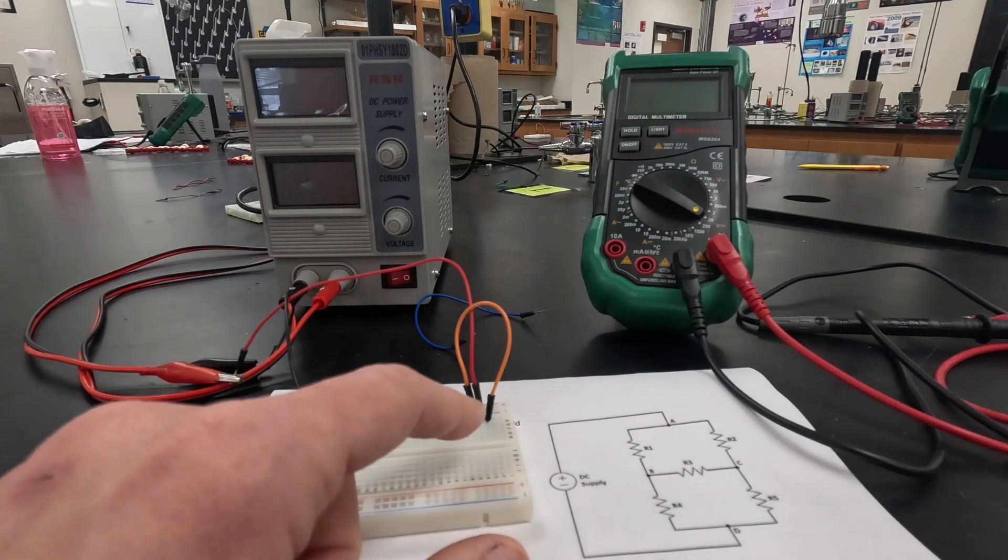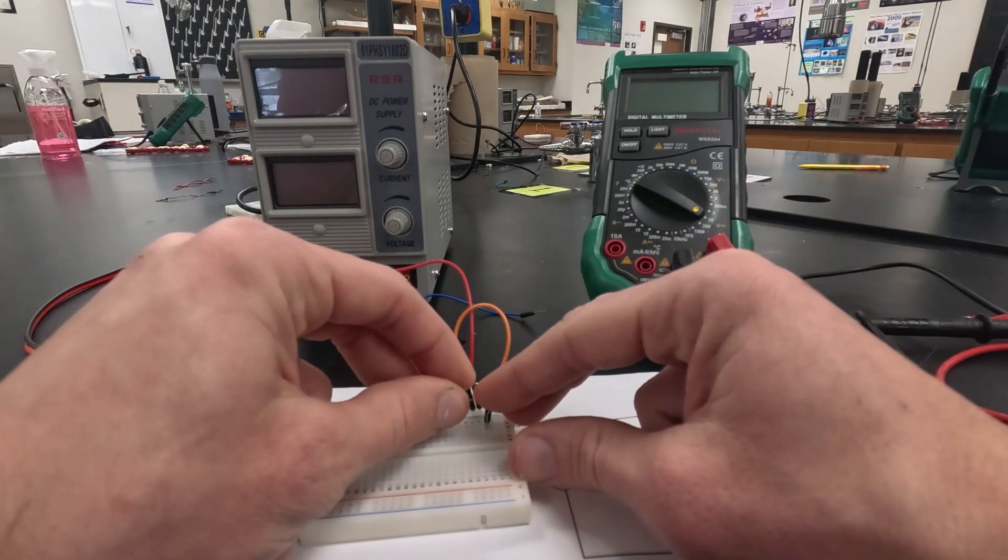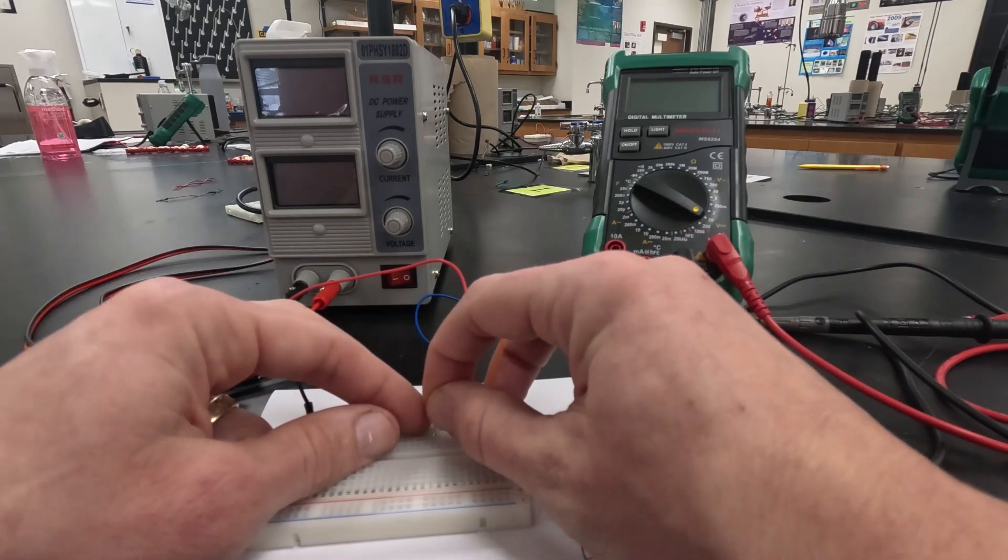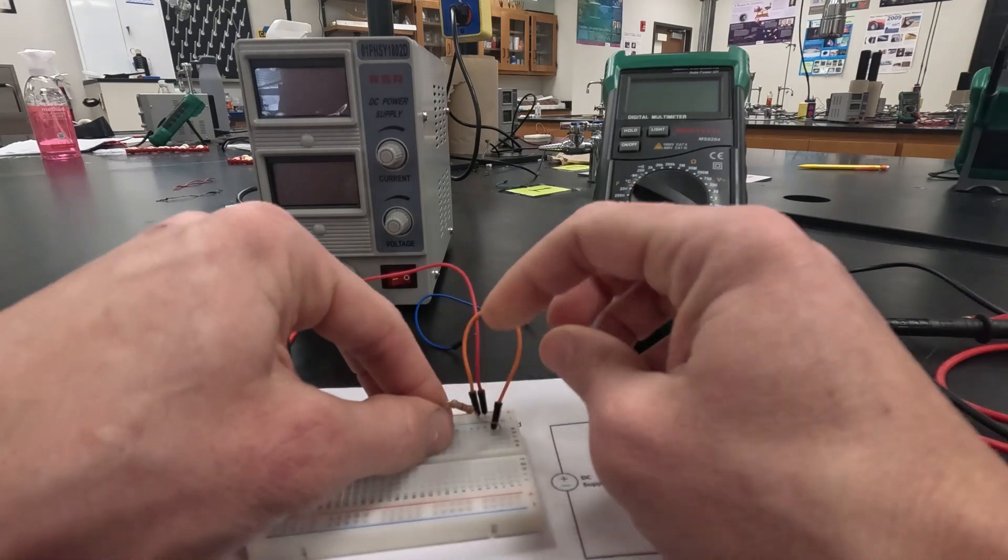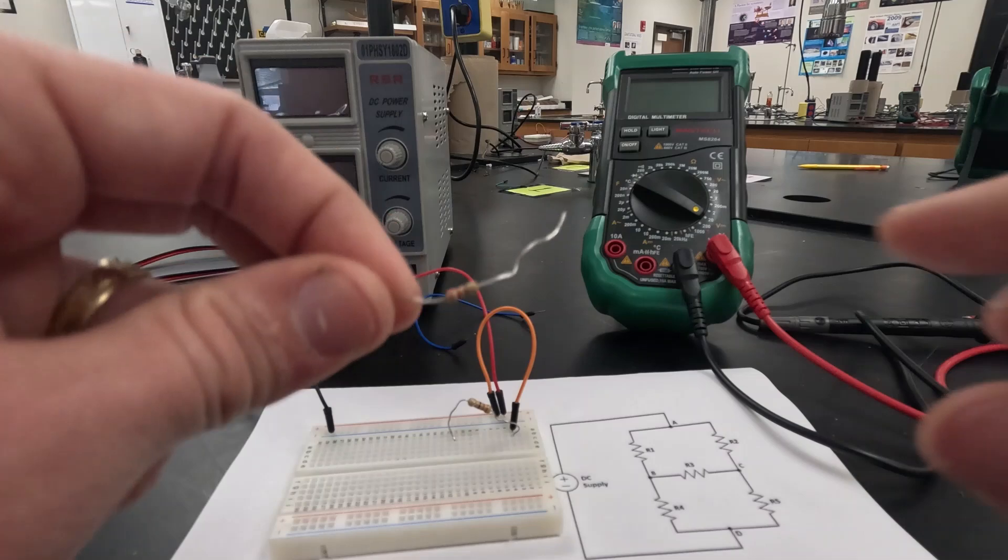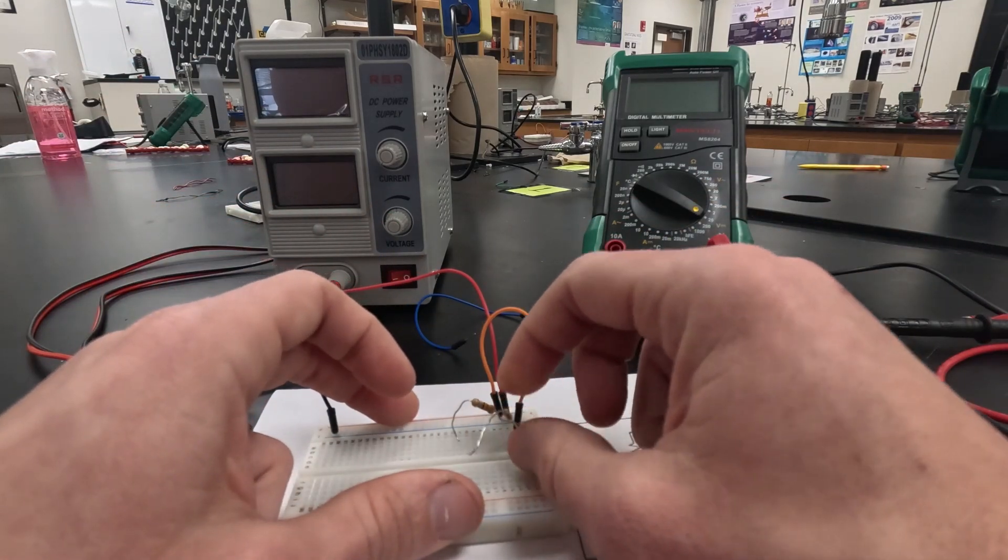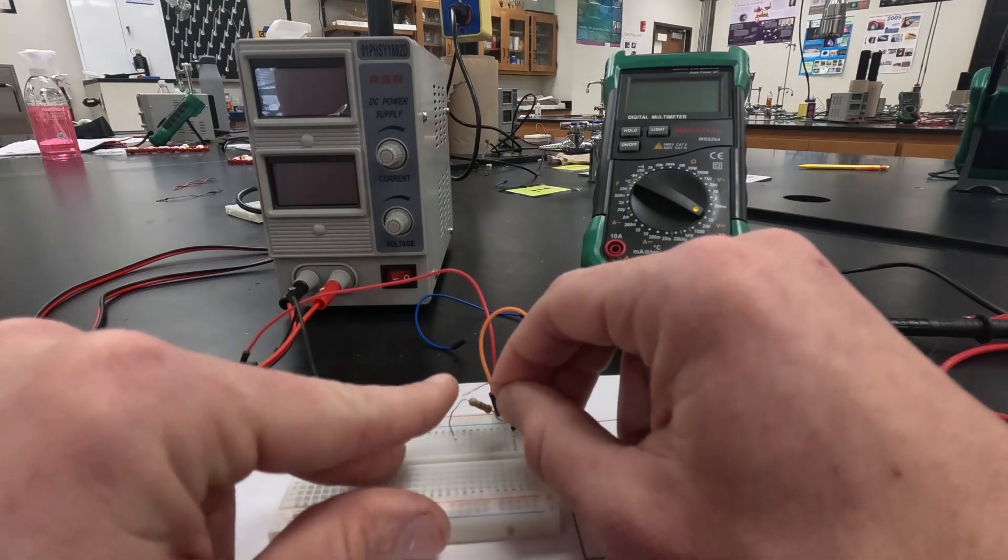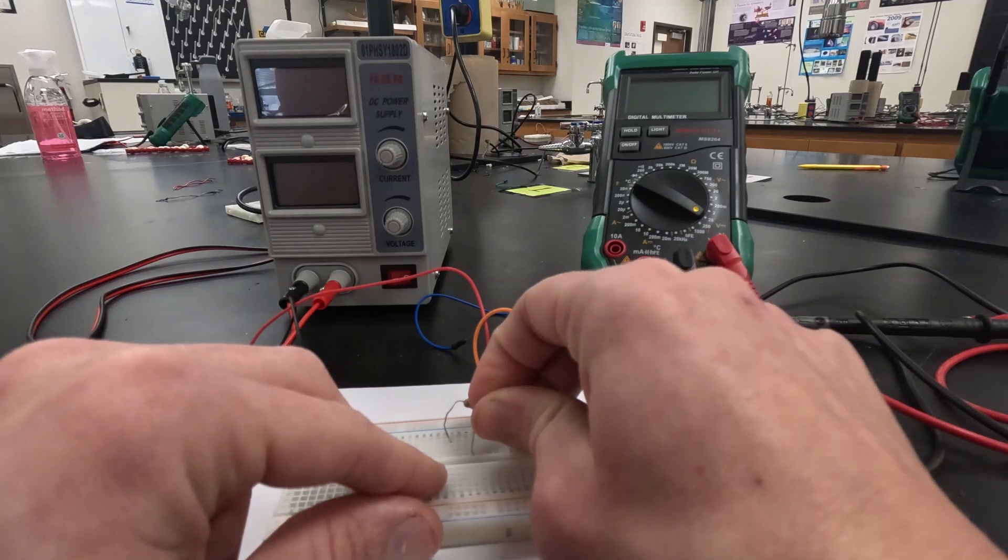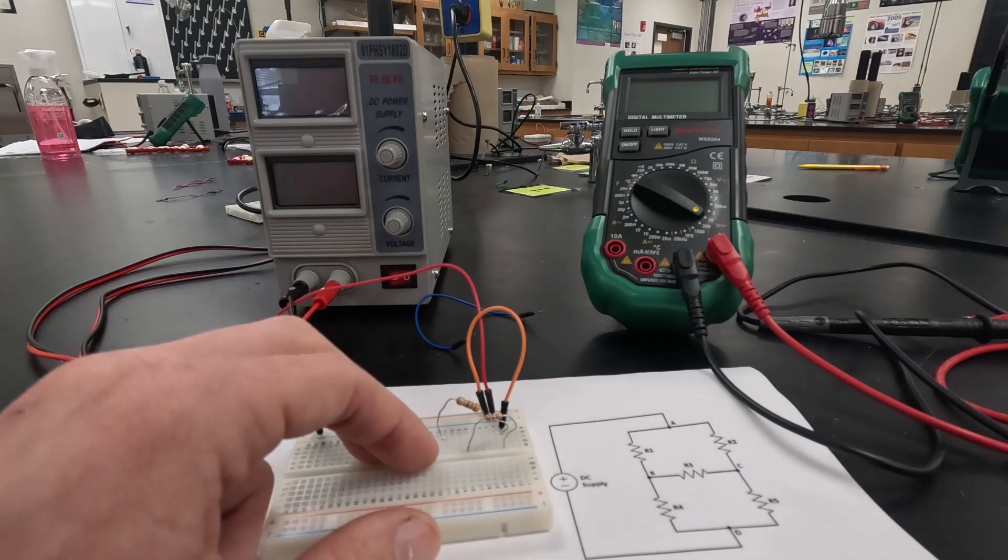Then I need two resistors. Which one you use is totally up to you. I'm going to start with the 330. Put that in row three and then put the second leg into row 11. That's going to be my first resistor. Then I need a second resistor. I'm going to do my 220 and that's going to go from that same row three, but this time I want to go to row eight.